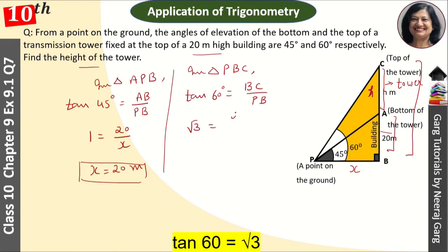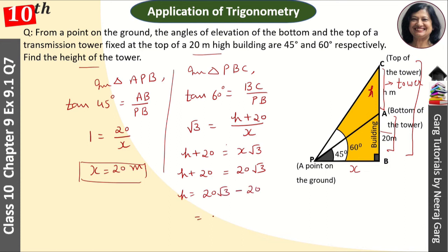So h plus 20 is equal to x root 3. h plus 20 is equal to x ki value 20 root 3, which is equal to 20 root 3. Then h is equal to 20 root 3 minus 20. Then 20 common le liya and bracket me aagaya root 3 minus 1. This h was our height of tower. This is what we had to find - 20 root 3 minus 1 meter. This is our answer.